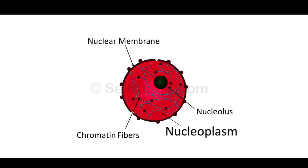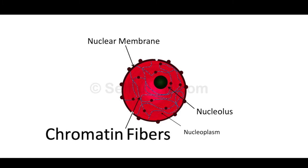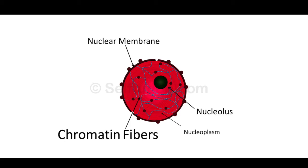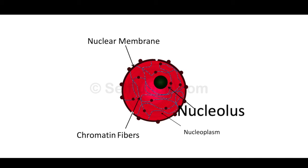Nucleoplasm is the jelly-like fluid inside the nucleus, in which chromatin fibers and the nucleolus are embedded. A network of thread-like structures called the chromatin network is present in the nucleoplasm; it consists of DNA and proteins. At the time of cell division, the chromatin fibers develop into thick ribbon-like or rod-like structures called chromosomes, which carry genetic characters from parents to offspring. The nucleolus is a dense, dark granular structure without a membrane; it consists of RNA and proteins and is the site of ribosome formation — the factory of ribosomes.